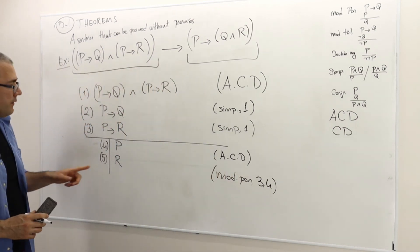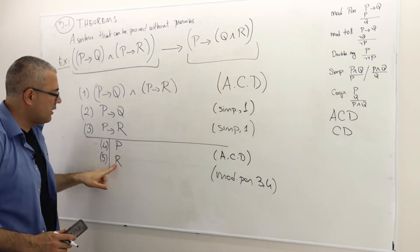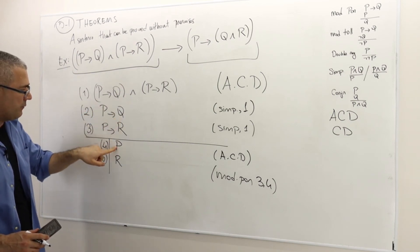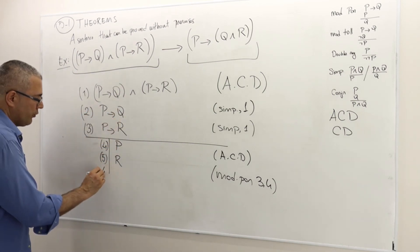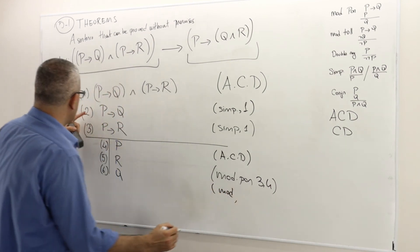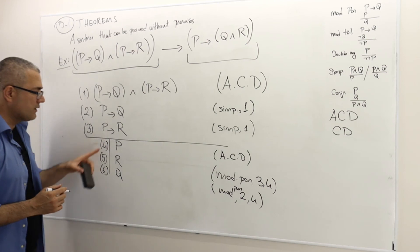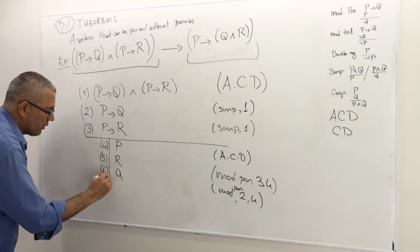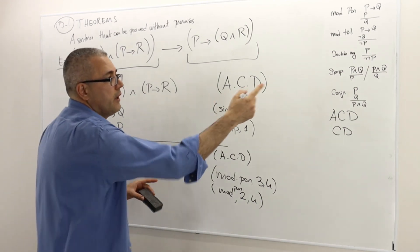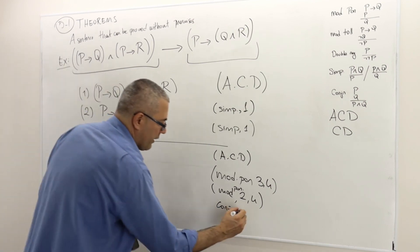I'm trying to show Q and R. I already showed R, so now I need to show Q. Given P implies Q and P, by modus ponens Q must be true. This is modus ponens between the arguments in line 2 and line 4. So both R and Q are true. Therefore, Q and R must be true by the conjunction of these two arguments in lines 5 and 6.